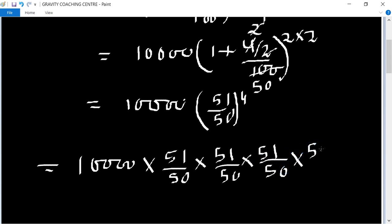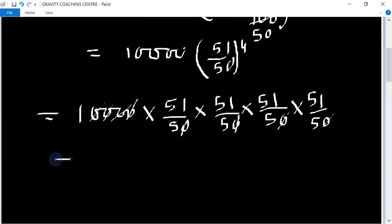Canceling zeros: 50, 50, 50, 50 cancel. 51 times 51 times 51 times 51 equals 6,765,201.